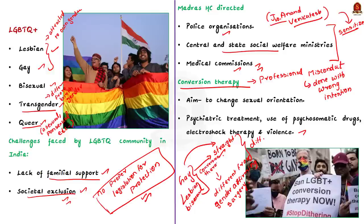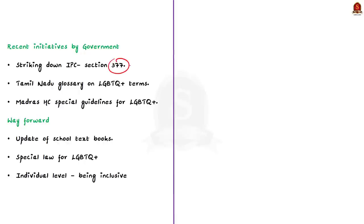Note that in 2018, the judiciary struck down Section 377 of the IPC (Indian Penal Code). This section criminalized consensual sexual intercourse between two adults of the same gender. By banning this section, many stigmas were removed and the community took their first step towards equality. From these two instances, we can see a consistent effort by the judiciary to protect the rights of the LGBTQ+ population.